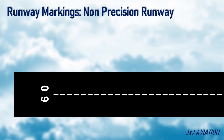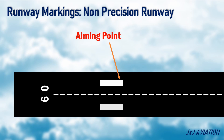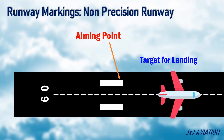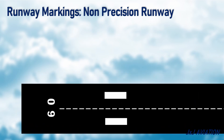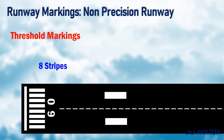In addition to these markings, a non-precision runway will also have aiming point and threshold markings. Aiming point markers consist of two thick white stripes on each side of the centerline. These markers are used as a target on the runway for descending towards the runway during landing. The runway threshold is used to identify the start of the runway. The threshold markings may consist of eight identical stripes placed symmetrically on the runway, or it may consist of a few stripes. The number of stripes is related to the runway width as mentioned here.